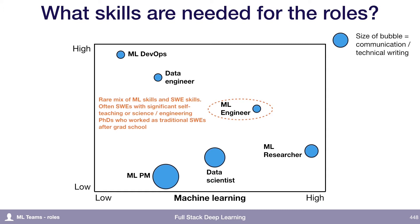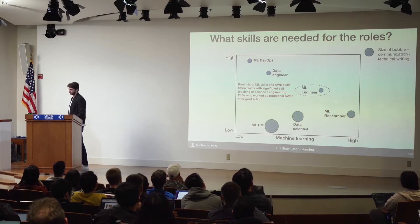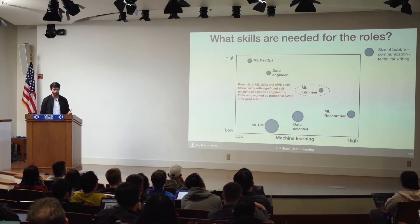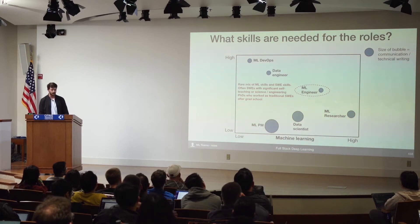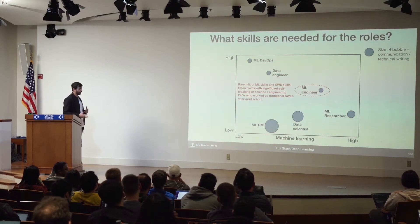The ML engineer role is a very rare skill set. These are folks that have a mix of machine learning skills — they can train models in TensorFlow — and also have software engineering skills. Where do you find people with both skill sets? Often these are software engineers who have invested a lot of time into self-teaching machine learning. You'll also often see people who did ML-adjacent PhDs, like PhDs in the sciences or statistics, who then went on to work as software engineers. They're really familiar with the core concepts of machine learning, they know how to train models, and then they've built the software engineering skill set on top of that.